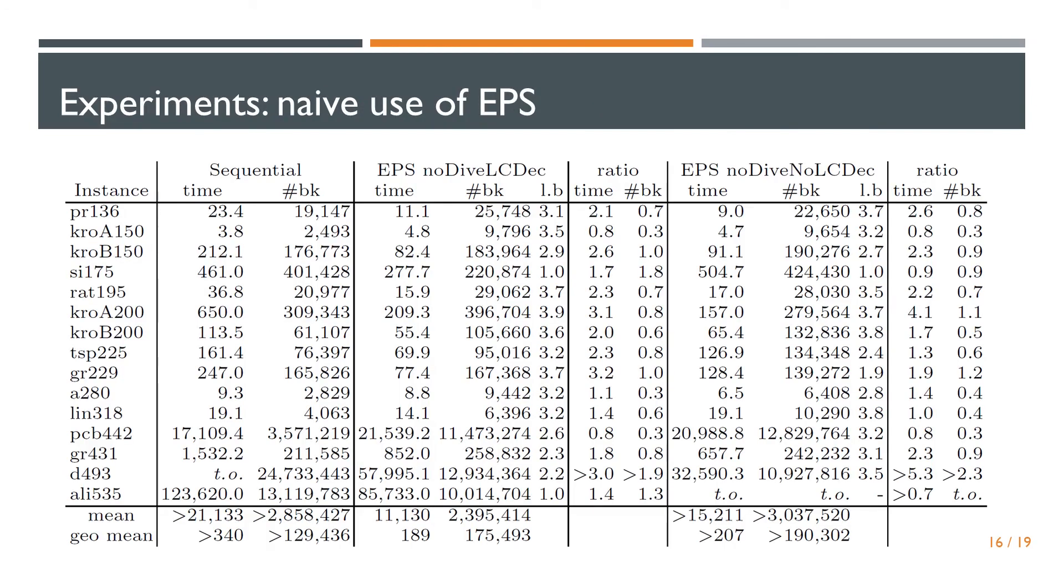I will now quickly introduce some experiments. For each of the parallel executions, we used 4 workers. The sequential column represents the solving in a sequential way. The EPS no-dive with LCFirst column represents EPS combined with LCFirst without making any modification. The EPS no-dive no-LCFirst column represents EPS without LCFirst at the decomposition. For each of the columns, a ratio EPS over sequential is given. If we look at the mean times, we notice that EPS with or without LCFirst allows to improve the results in most cases. However, some instances are longer to solve in parallel than sequentially, while using 4 workers. The issue is that the total number of backtracks performed with EPS can be much higher than the number of backtracks performed sequentially. Thus, the naive use of EPS and LCFirst does not provide robust results.